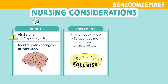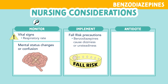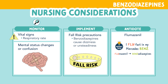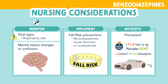You as a nurse need to know the antidote for benzodiazepines, just in case a patient becomes unresponsive or experiences severe respiratory depression. The antidote for benzodiazepines is flumazenil. You can remember this by the memory trick: I flew fast in my Mercedes Benz — like benzodiazepines.